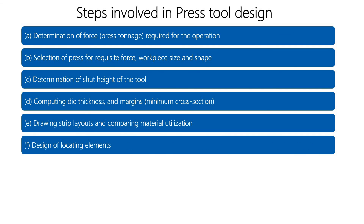The sixth step is design of locating elements. Here we design components like the pilot punch — determining what diameter it should have so it can accurately guide the strip. The accuracy depends on the product requirements. When using a location method like the pilot method, you need to apply some tolerance so the strip can move freely. How much tolerance to implement on the strip being manufactured is considered here.